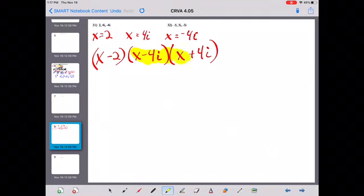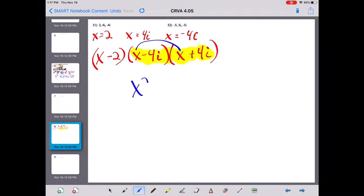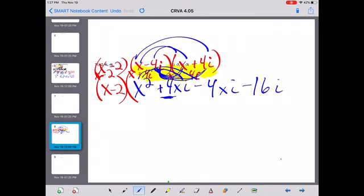And actually focus on these two. Why? Because those two have i's with them. So, let's do some foiling. We get x squared, positive 4xi, and then we get negative 4xi, and we get negative 16i squared.